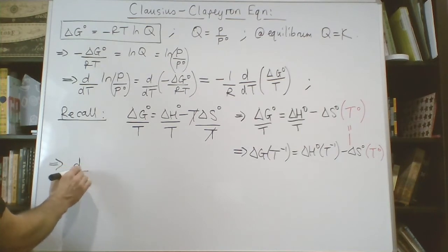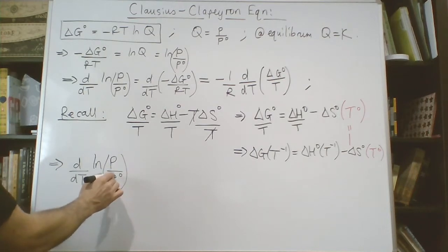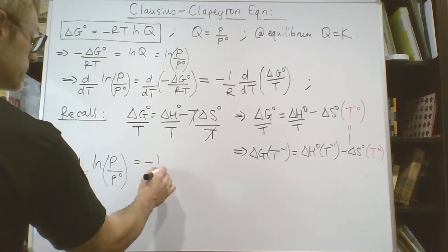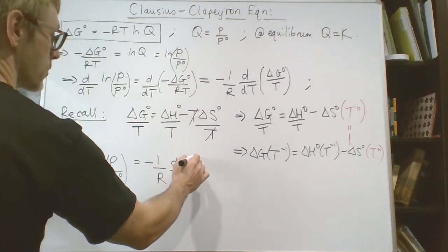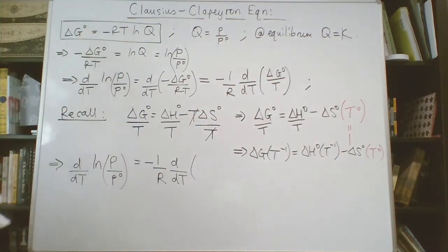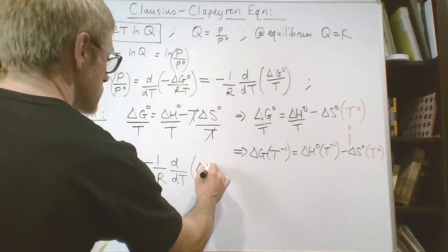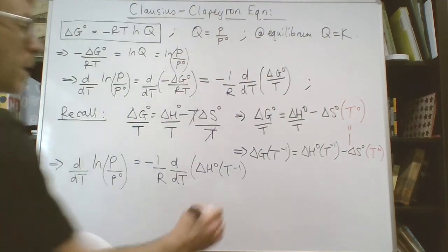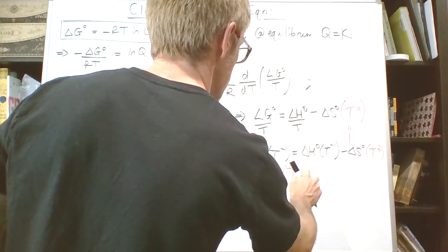So we've got d/dT of log(p/p°) equals -1/R times d/dT, and then we've got this stuff in the parentheses which we're going to rephrase as this material here. We've got ΔH° times T^-1 minus ΔS° times T^0.